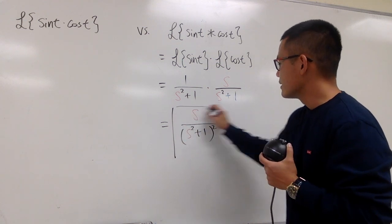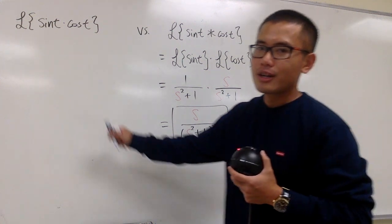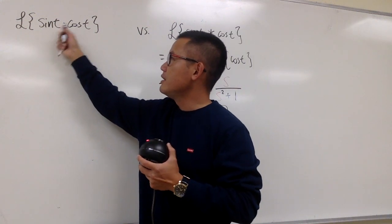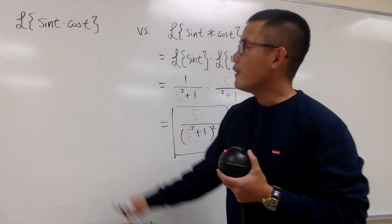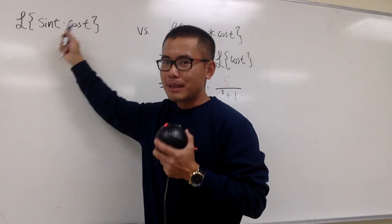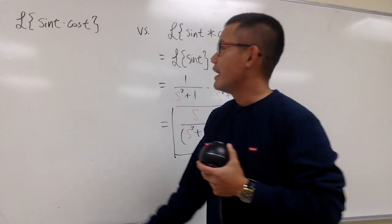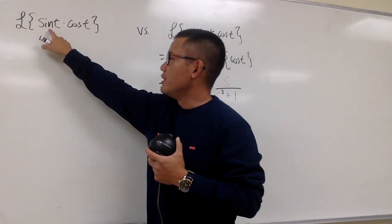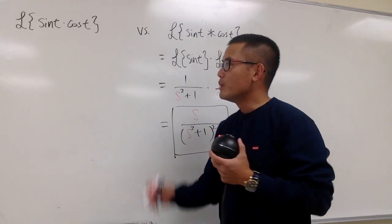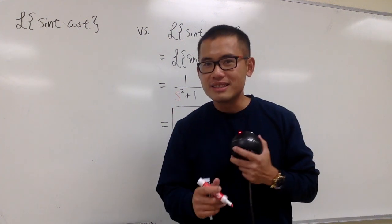And this right here is it. Now let's talk about how we can do the Laplace transform of sine t times cosine t. When we have a regular multiplication, there's no good formula we can use. This is not a particular function — this is just sine t times cosine t.